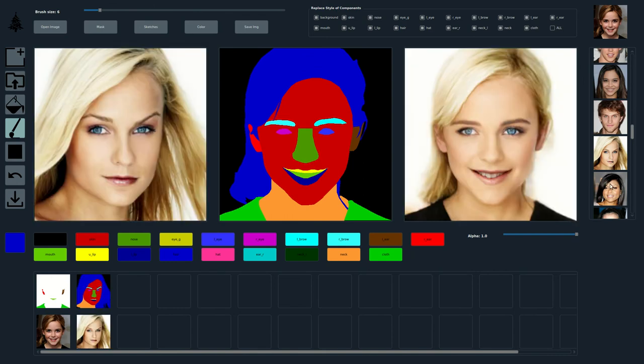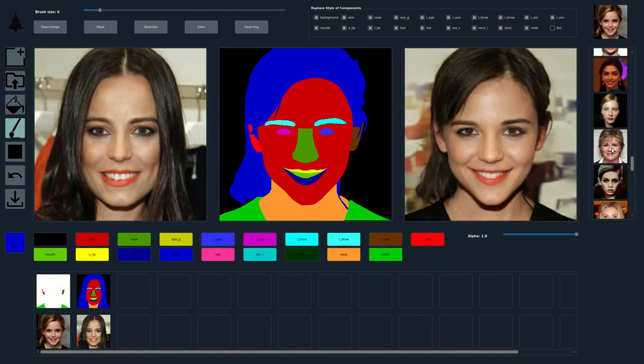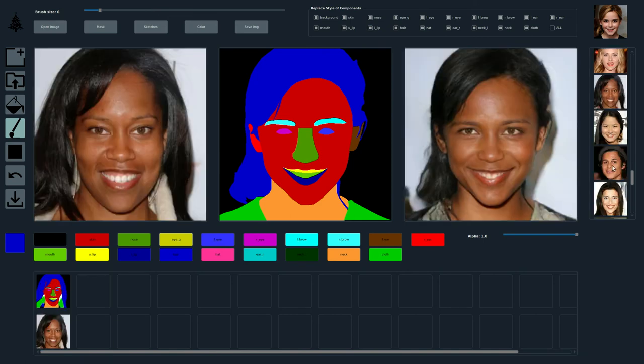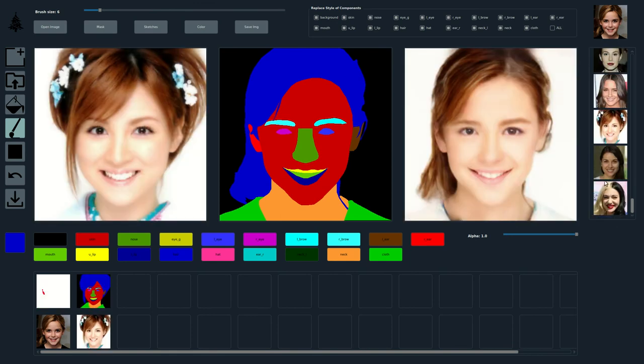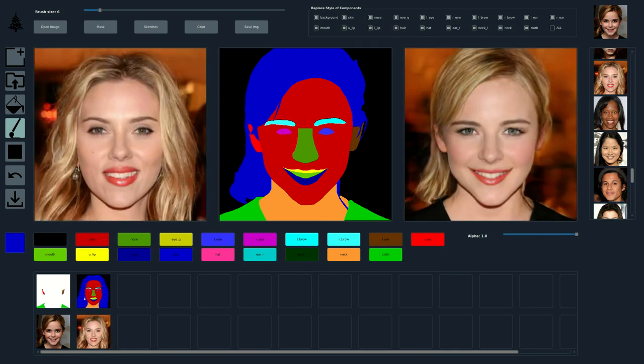Here, we show editing results, where all style codes are obtained from a single style image. Note how our method can capture the essence of elements such as hairstyle, skin tone, background and eyes in a per-region style code and transfer it to a face segmentation mask with very different region shapes.